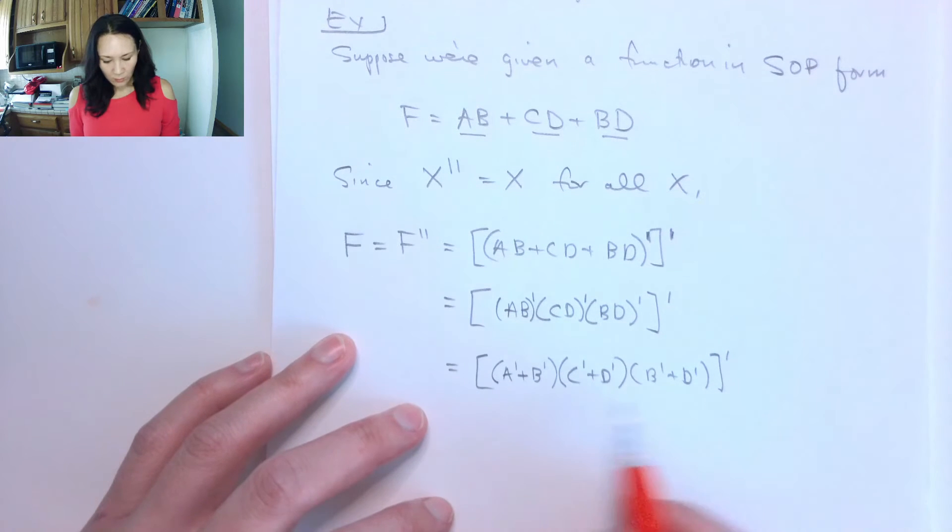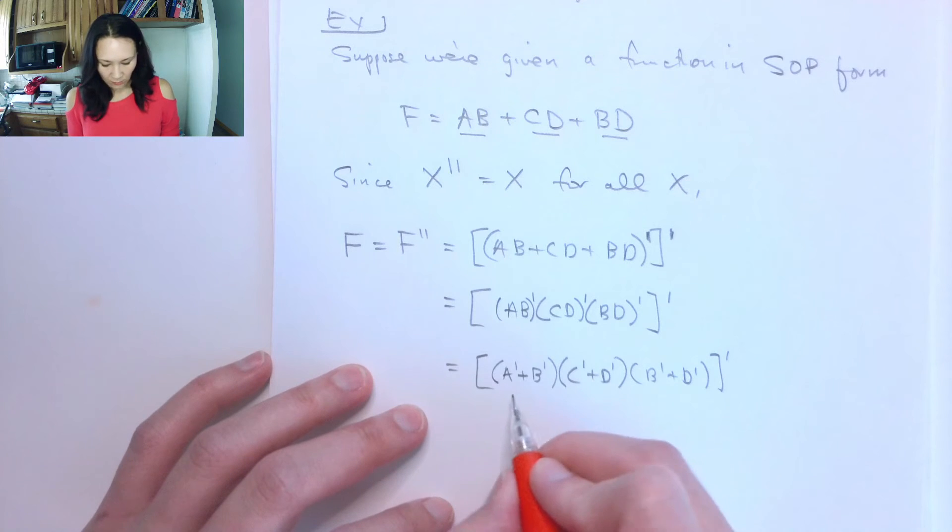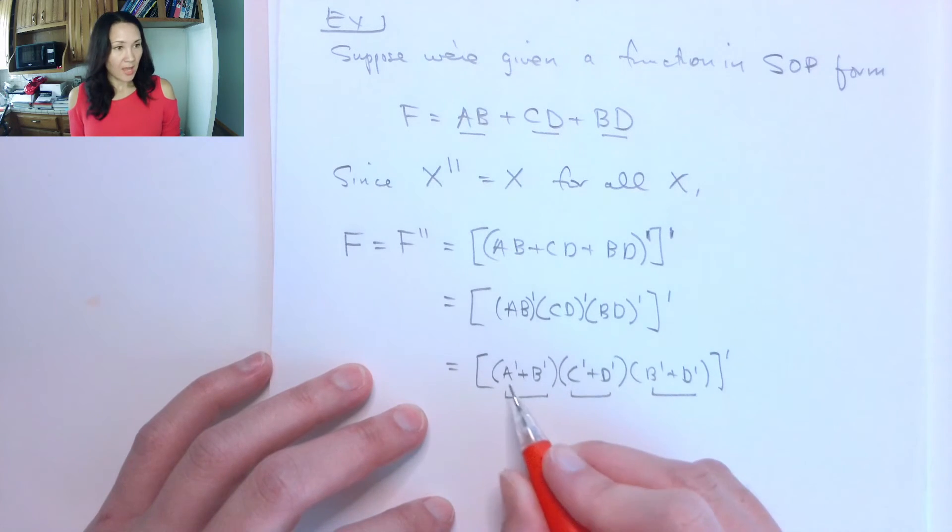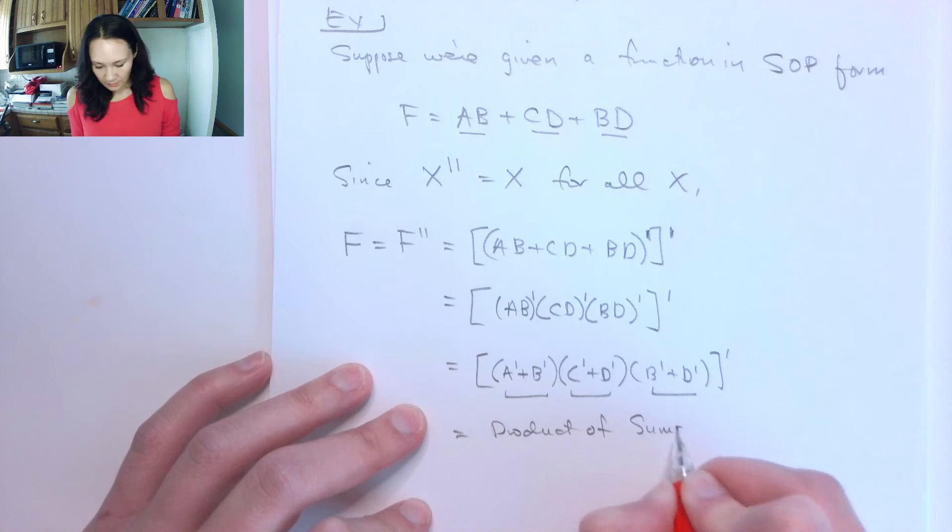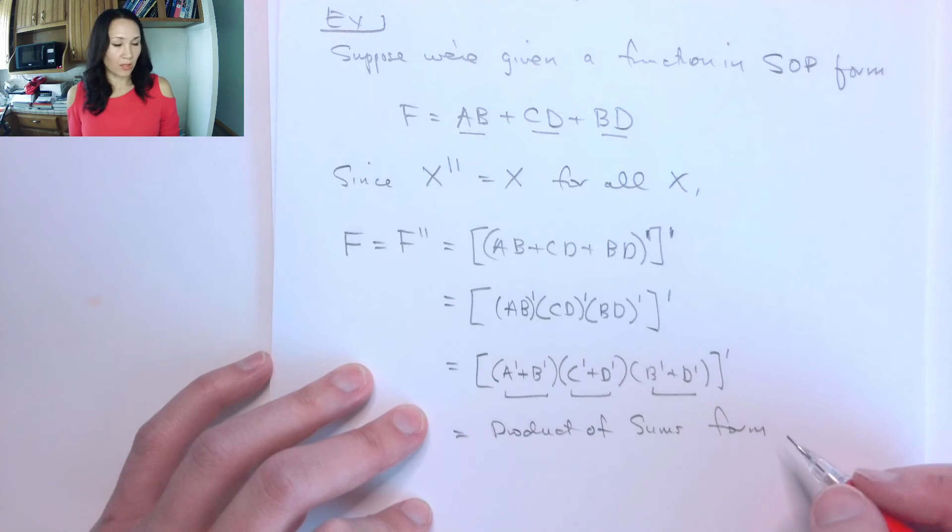So now look what I have. I have sums that are being ANDed together. So this is a sum, this is a sum, this is a sum, and they're kind of being producted together. So this is actually in product of sums form. And the way we got that is by applying De Morgan's twice.